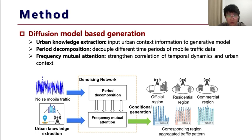The entire framework includes three units. The first is the urban knowledge extraction unit, which mainly builds an urban knowledge graph. The second is the period decomposition unit, extracting period information of different scales of traffic sequences. The third is the frequency cross-domain attention mechanism, designed to capture the correlations between urban context and network traffic. Our method can well explore the spatial-temporal features of network traffic, and can control the model to generate network traffic for desired regions with the help of urban knowledge. We welcome everyone to read our paper for deeper exchange and discussion. Thank you all.